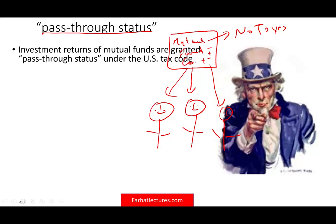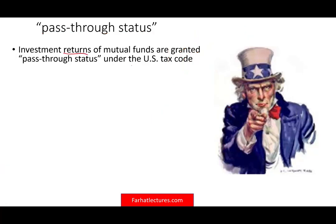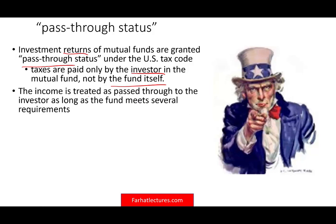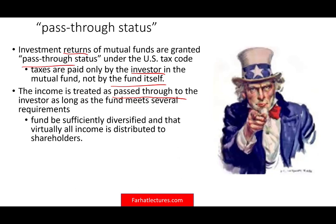Investment returns of mutual funds are granted pass-through status under the U.S. tax code. Taxes are paid only by the investor in the mutual fund, not by the fund itself. The income is treated as pass-through to the investor as long as the fund meets several requirements. Mutual funds will practically always meet those requirements. Basically, the fund has to be diversified and must distribute all its income to shareholders.